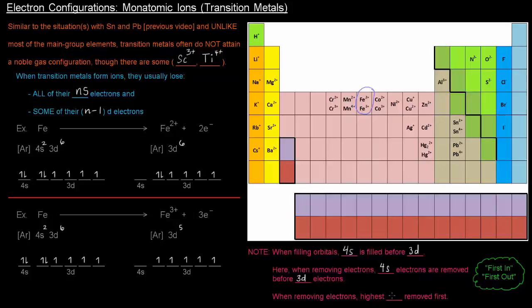When removing the electrons, the highest n value is removed first. So, 4 is bigger than 3, so they leave first.